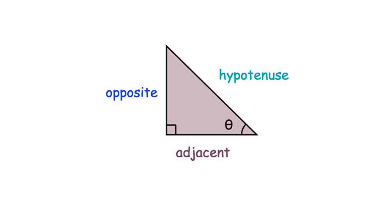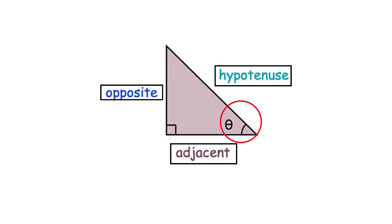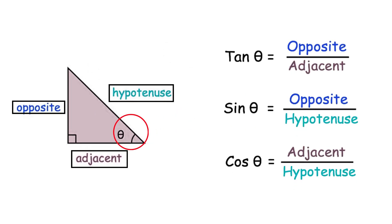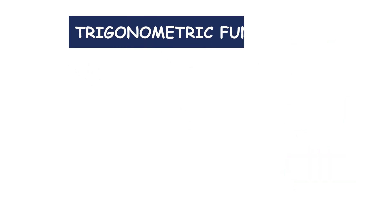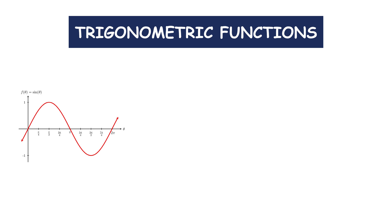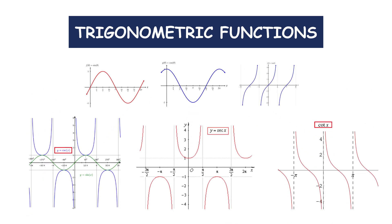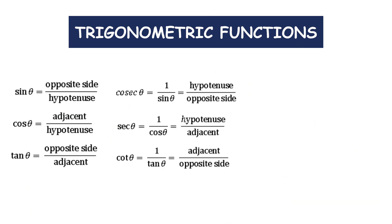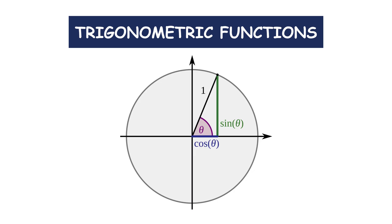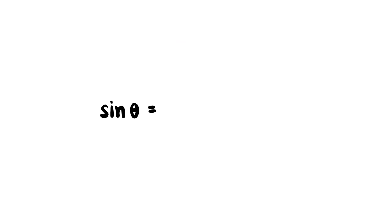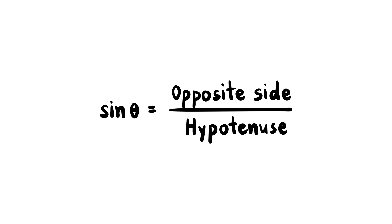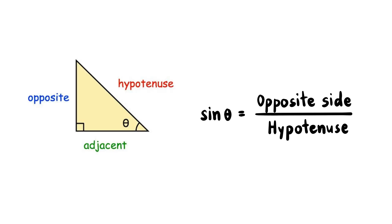Trigonometry studies the relationships between angles and sides of triangles, as well as their applications in space. Its foundation lies in the trigonometric functions sine, cosine, tangent, and their reciprocals, which describe specific ratios in right triangles and are extended through the unit circle to any angle. For example, sine theta equals opposite over hypotenuse.